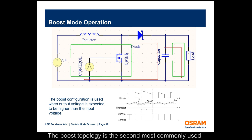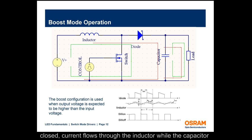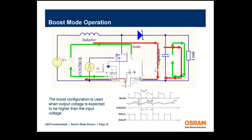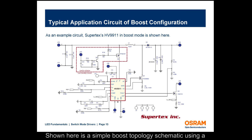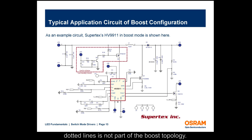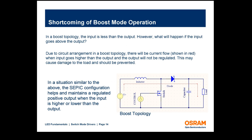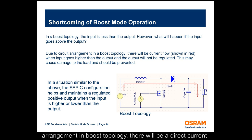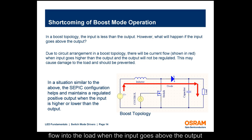The boost topology is the second most commonly used configuration. In boost mode operation, when the switch is closed, current flows through the inductor while the capacitor supplies the load. When the switch opens, stored energy in the inductor releases, the capacitor charges, and the load is supplied. Shown here is a simple boost topology schematic using a SuperTex HV9911. Ideally, boost topology is used when input voltage is lower than the output voltage. However, due to the circuit component arrangement, there will be a direct current flow into the load when the input goes above the output voltage, resulting in no current regulation.